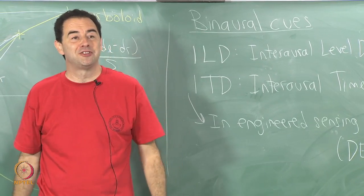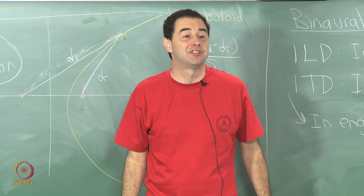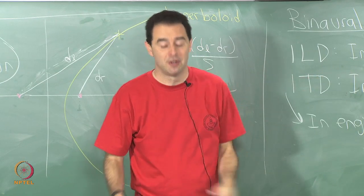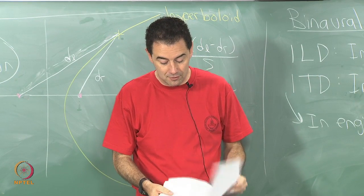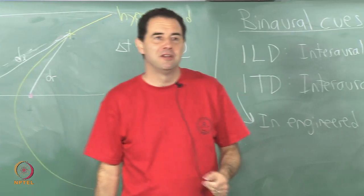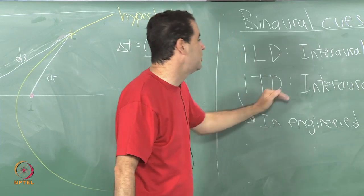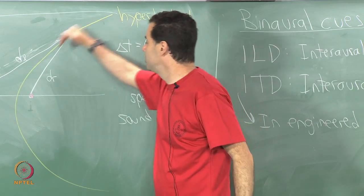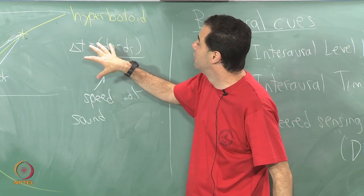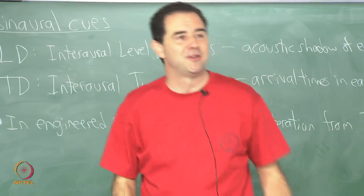Interestingly, we can in fact determine where sound is coming from inside the cone of confusion. Part of that is because we are using inter-aural level differences, and part of it has to do with the pinna. So there is more information available. But if you are only looking at inter-aural time differences, you have a cone of confusion — a region within which you cannot distinguish any further where the sound is coming from based only on time difference of arrival of the sound waves.